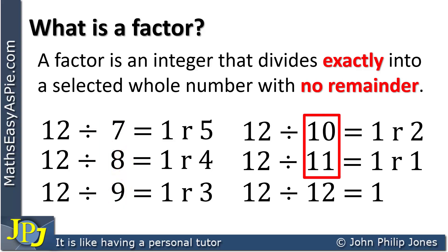Over here you can see I've divided by 10 and 11 and if you look at the results they've all gone once and you can see in both cases there is a remainder. So 10 and 11 are not factors of 12.